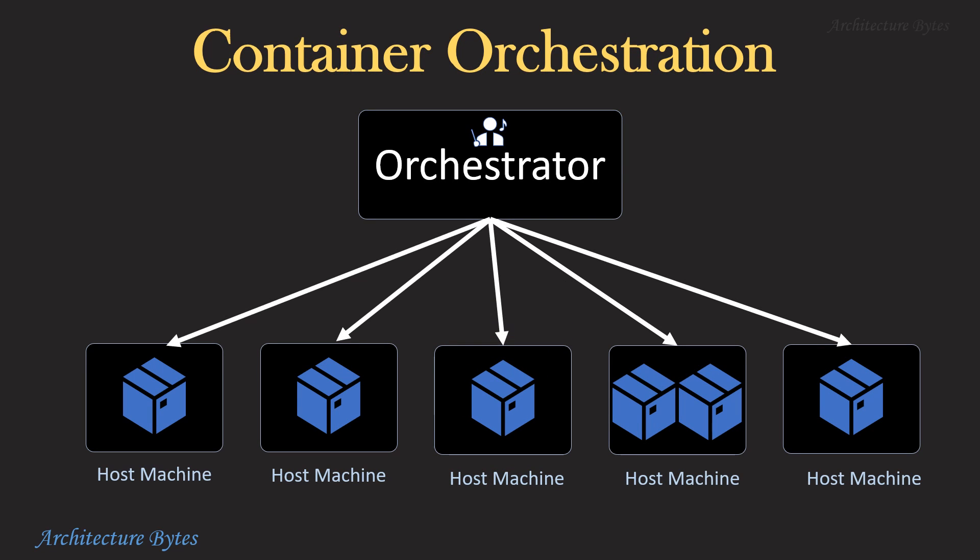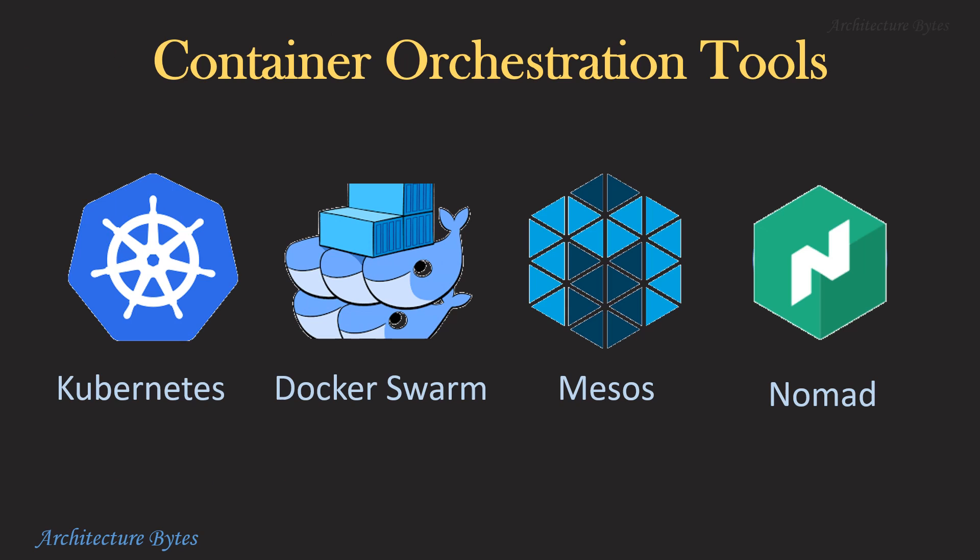An orchestrator would typically work with many computing nodes in a cluster on which containers are deployed and run. It tracks resources on these nodes and the lifecycle of containers. Some popular container orchestration tools are Kubernetes, Docker Swarm, Mesos and Nomad. Of these, Kubernetes is immensely popular.